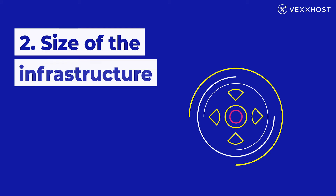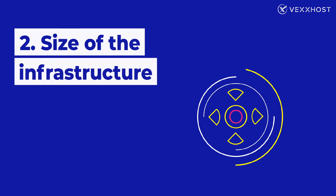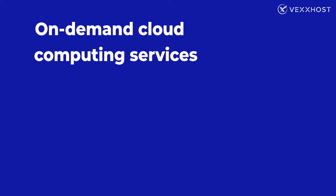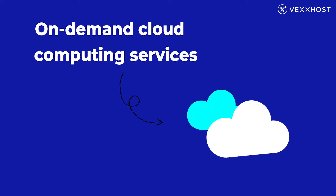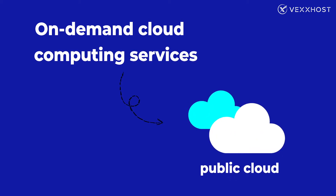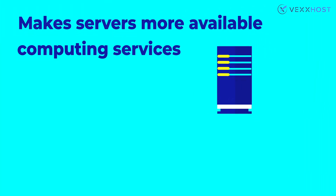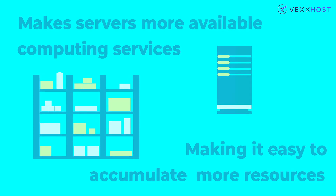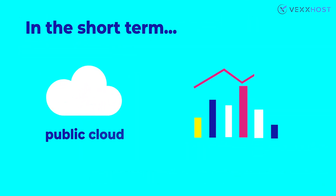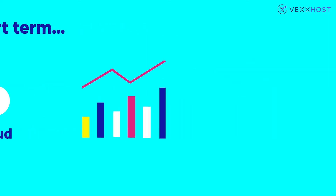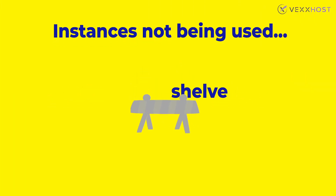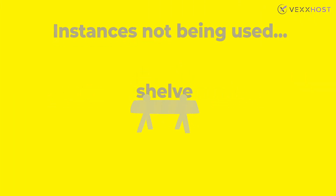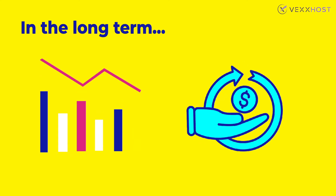Size of the infrastructure. You don't want your infrastructure to be too big for your company. In some cases, companies use on-demand cloud computing services like Public Cloud, where they can access on-demand services or instances. This makes servers available immediately, making it easy to accumulate more resources than you need. While public clouds are more economical in the short term, you need to make sure that you are only consuming what you need and deleting or shelving any instances not being used. Otherwise, you can expect a poor return on investment in the long term.